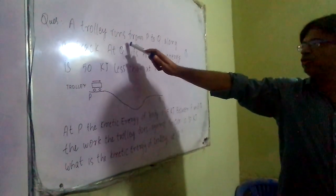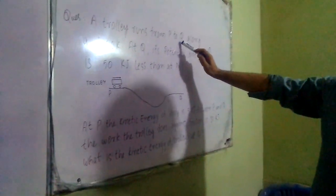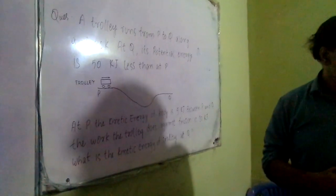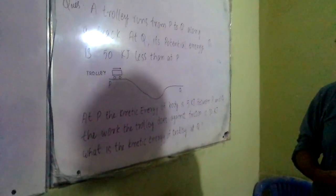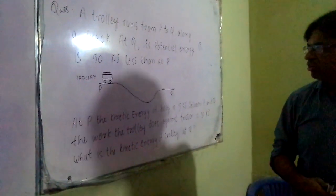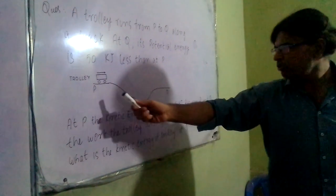The question is: a trolley runs from P to Q along a track. At Q, its potential energy is 50 kJ less than at point P.